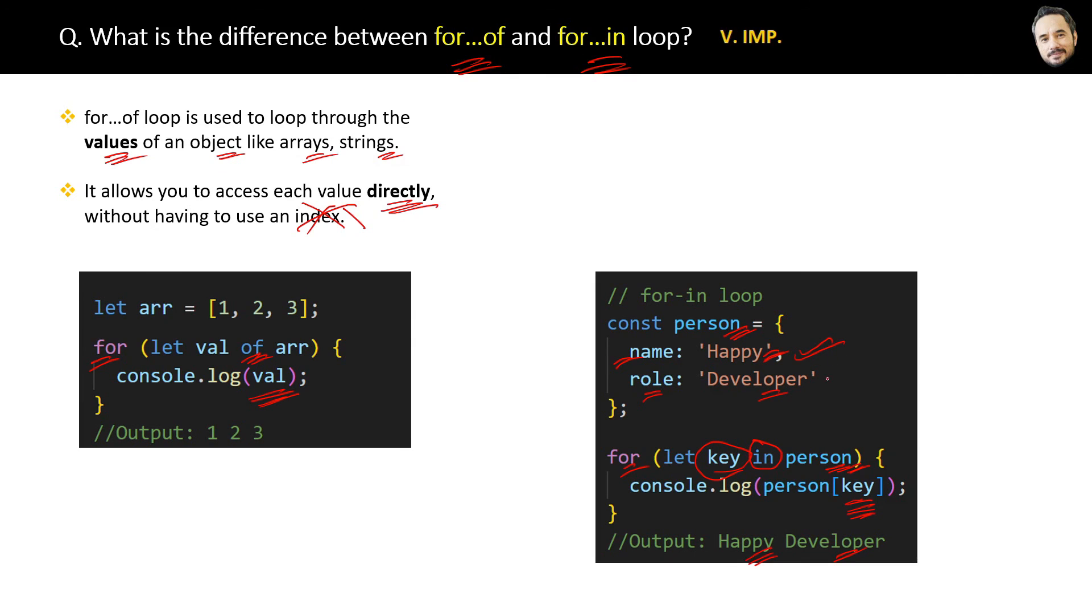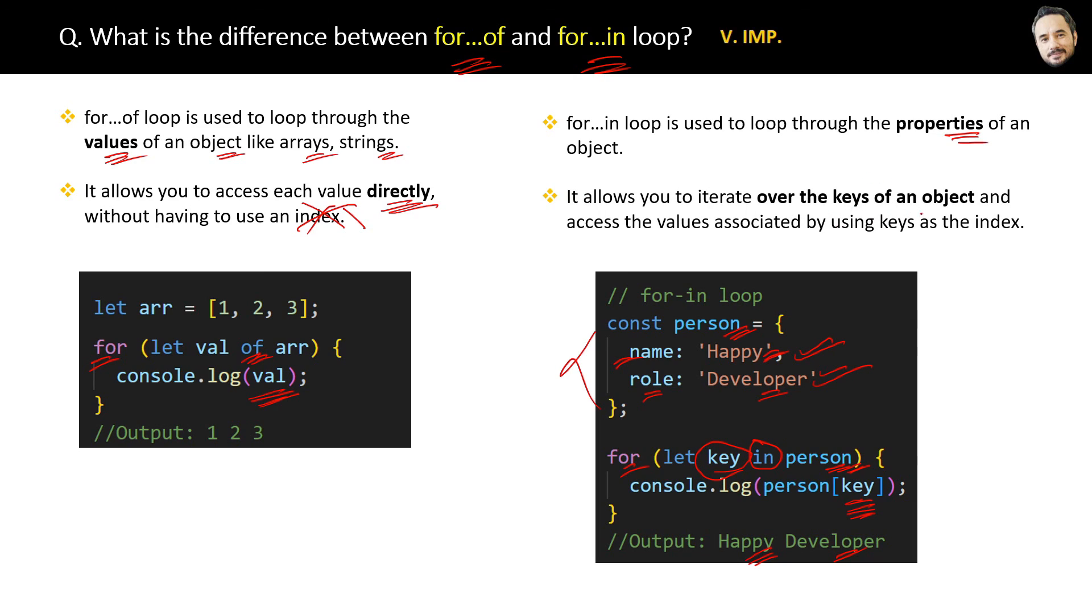The point is: the for...in loop is used to loop through the properties of an object. It allows you to iterate over the keys of an object and access the values associated by using keys as the index. So that is the difference which we have learned.